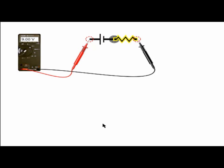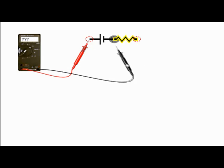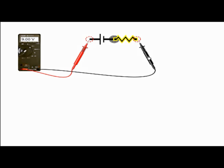I'm going to model the behavior of the cell or battery that we've seen by using two components imagined to be contained inside the cell or battery. Those two components are a source of EMF and a resistor. Here I've got a voltmeter connected across the terminals of my model battery and I can see that the terminal PD is 9 volts, and I can show you that that is the same as the EMF inside.